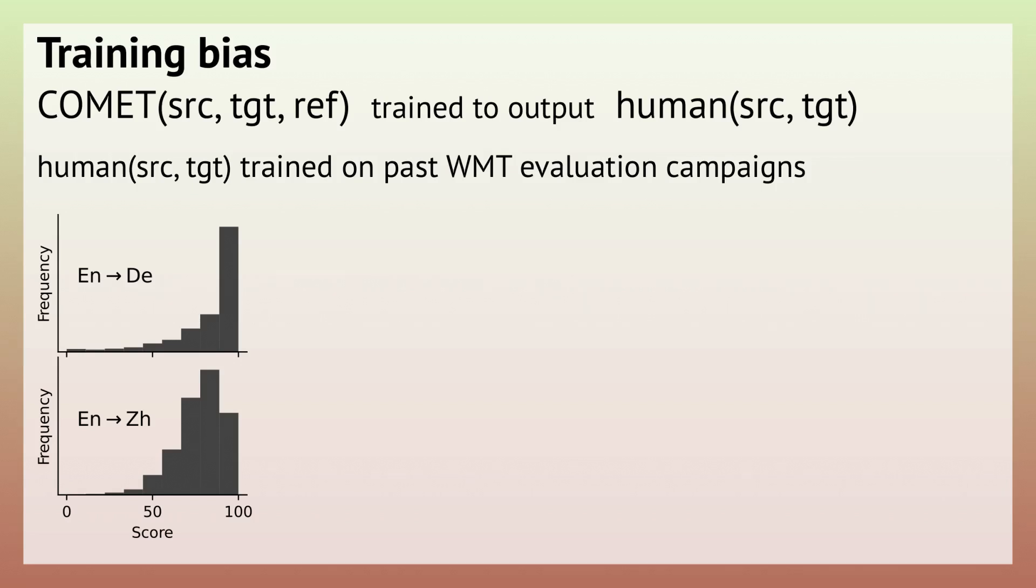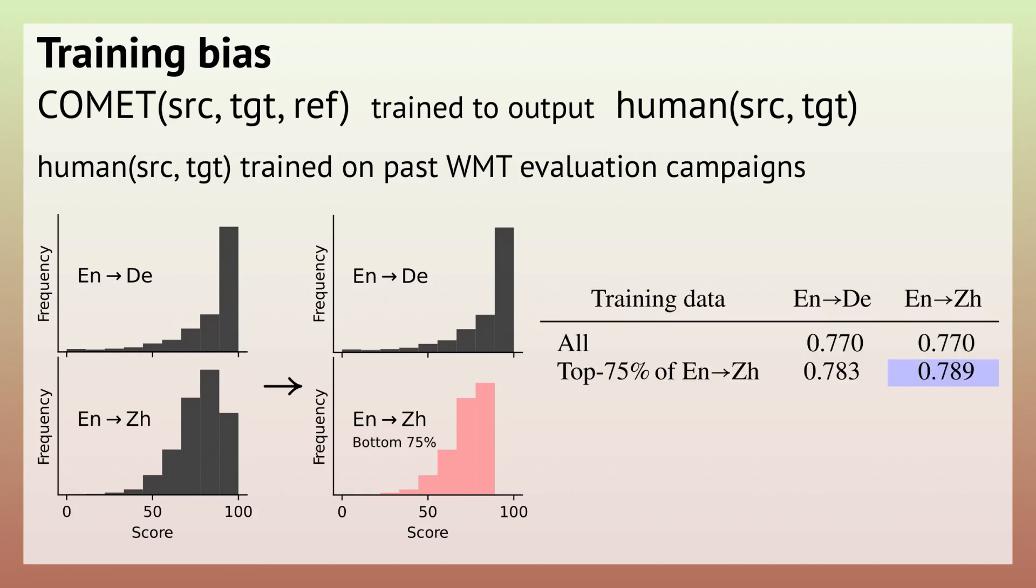To show this, we devised an experiment where we take only the bottom 75% of the English to Chinese data sorted by the score. Now when we train COMET on this, COMET will pick up this bias and will think that it is not possible to get highest scores in English to Chinese translation. When we compare the baseline COMET, COMET trained on top 75% for Chinese in blue, or COMET trained on bottom 75% for Chinese in red, it changes the average score for systems in that language pair even though the translations remain the same. For now, there is no straightforward solution to this apart from being aware of COMET picking up on this historical bias.